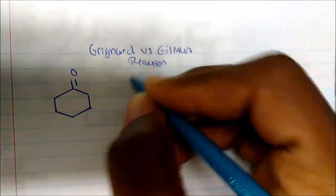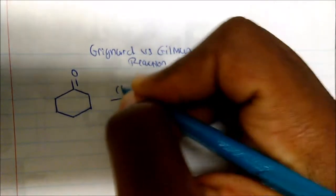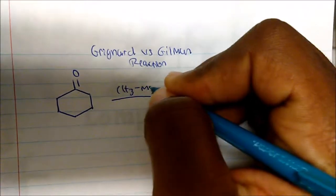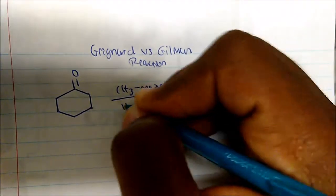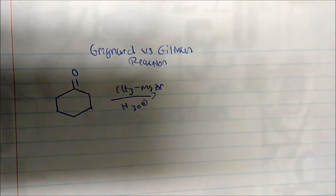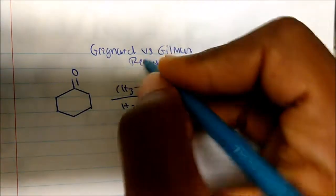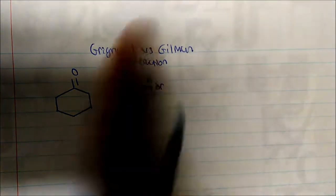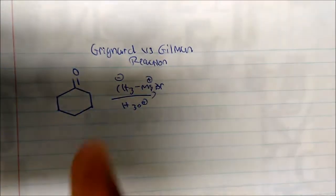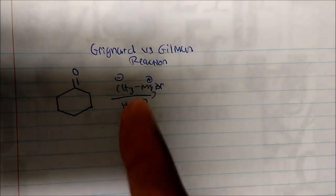If I take a cyclic ketone here and I add methyl magnesium bromide, and we do it in some sort of acid (we always do Grignard chemistry in acid), we know that this bond is ionic, so we create a nucleophile, a negative charge on our carbon.